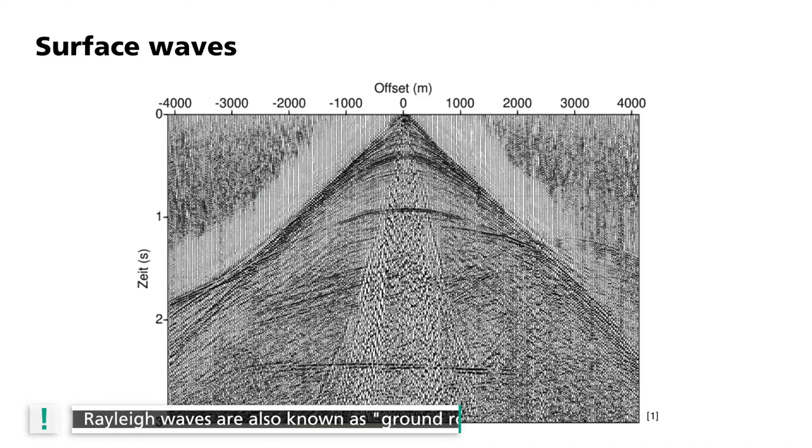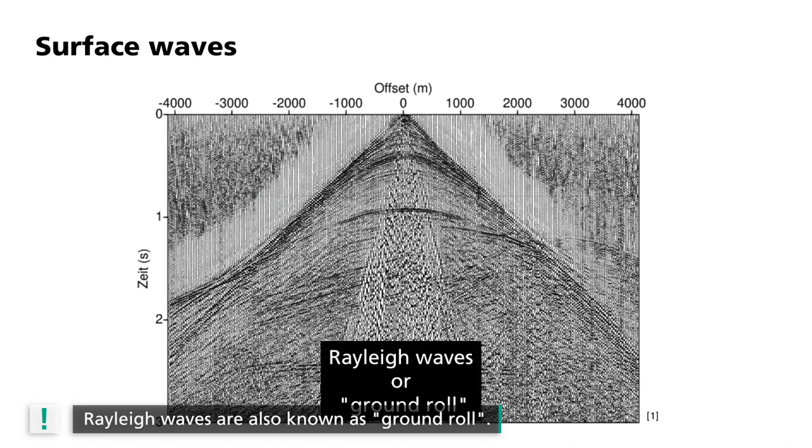The surface waves visible here are so-called Rayleigh waves or, as they are also known, ground roll. They are a combination of longitudinal waves and vertically polarized transverse waves.